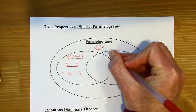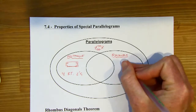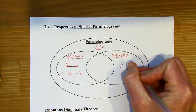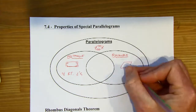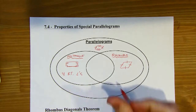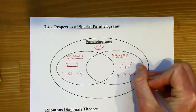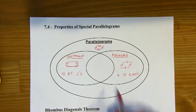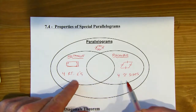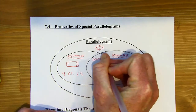Over here on the right side, I've got a rhombus. We haven't talked much about a rhombus yet. A rhombus is going to be a quadrilateral where all four sides are congruent — it's not just that the opposite sides are congruent. A diamond shape kind of works here, though it's not always going to look like a diamond. This is when we have four congruent sides. And the center of the Venn diagram, where a rhombus and a rectangle meet, is called a square.